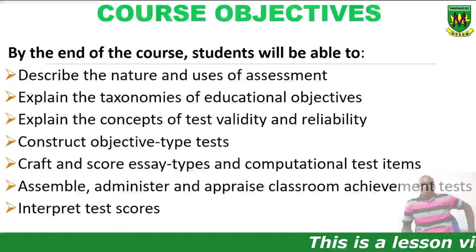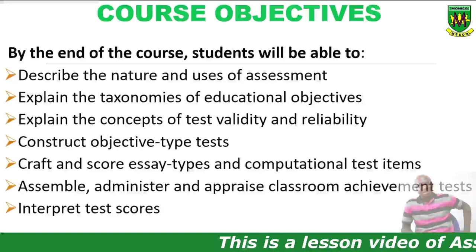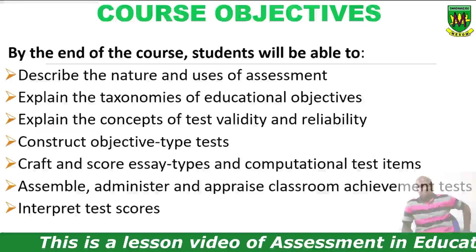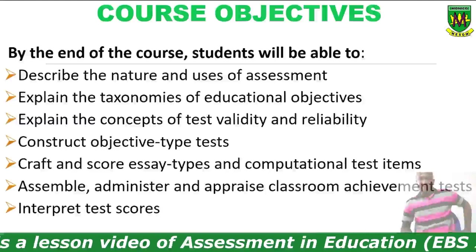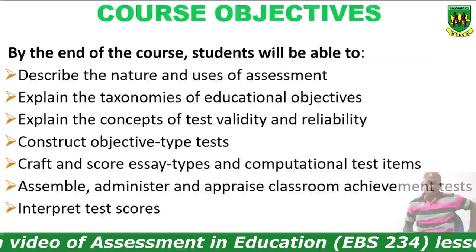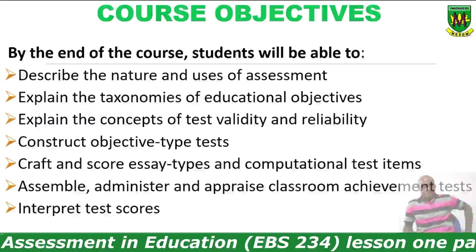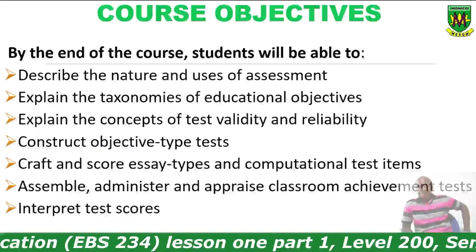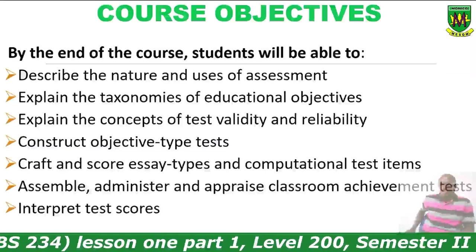Course objectives: by the end of the course, students will be able to first describe the nature and uses of assessments, next explain the taxonomies of educational objectives, and also explain the concepts of test validity and reliability — which are the most salient issues in assessment in education. Students should also be able to construct objective type test items, craft essay types and computational test items, assemble, administer, and appraise classroom achievement tests, and finally interpret test scores.